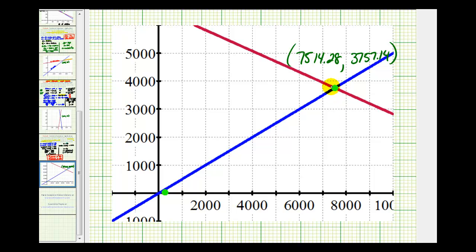And the y coordinate looks like it is approximately 3,757 dollars and 14 cents. It is hard to be exact on this graph, but it's good enough to verify that our solution is correct. This is the amount of money at 3% simple interest and this is the amount of money at 8% simple interest.